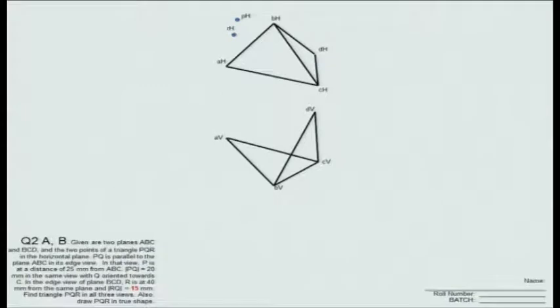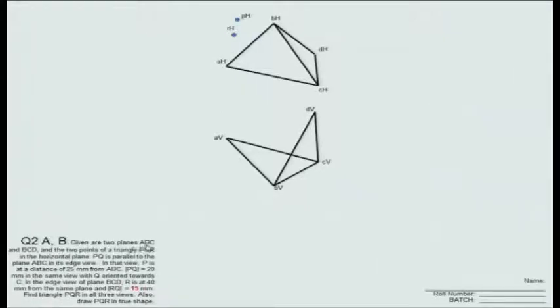This is a problem on lines and planes. When I was working on this problem, I did not realize that it would become very interesting and very challenging. In particular, because we have multiple solutions to this problem, and I will talk about them as I move along. The problem statement is this: given are the two planes ABC and BCD and the two points of a triangle PQR.